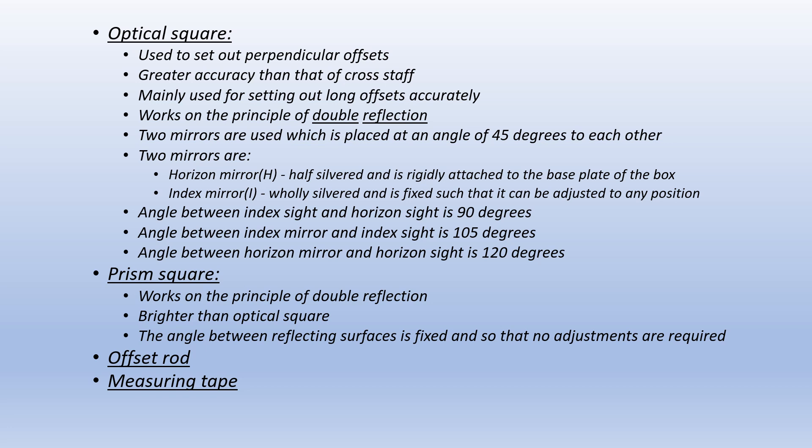The prism square also works on the principle of double reflection. It is brighter than the optical square. The angle between its reflecting surfaces is fixed, so no adjustments are required.